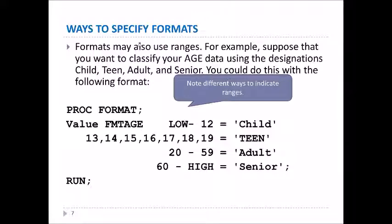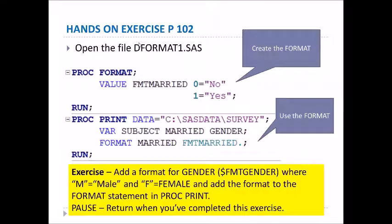Here is an example where I'm creating a format called FMT_AGE. LOW-12 means 'child'; 13, 14, 15 up to 19 equals 'teen'; a range of 20-59 as 'adult'; and 60-HIGH equals 'senior'. SAS understands that the word LOW means the lowest value in a category and HIGH means the highest value.